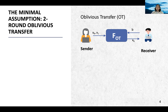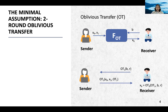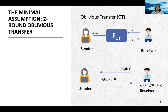Oblivious transfer is a two-party primitive between a sender and a receiver. The sender has two inputs and the receiver has a choice bit. The receiver receives the input of the sender indicated by the choice bit and nothing beyond. In its minimal form, OT requires two rounds. The receiver sends the first round message as a function of its bit and randomness. The sender sends the second round message as a function of its pair of inputs and the receiver OT message. Finally, the receiver computes its output using the sender OT message, its bit, and the randomness. We denote the three functions respectively by OT1, OT2, and OT3.